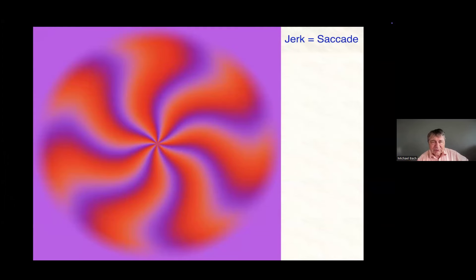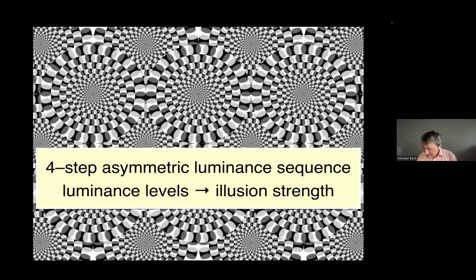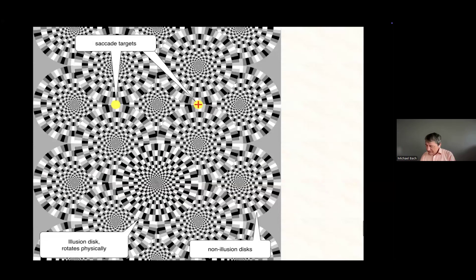It also works without color, in black and white. Black and white is easier to analyze because here you can see the four-step asymmetric luminance sequence. Any of these wheels has a black part, then next to it a light gray, then white, then a dark gray, and then black again. So it's asymmetric - light gray and dark gray around the black or white respectively. The illusion strength depends on the luminance levels of the two intermediate gray patches, and we measured that.